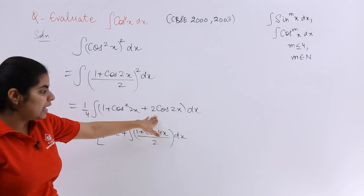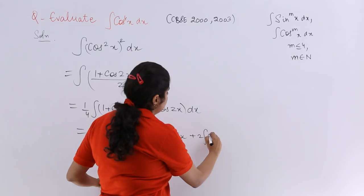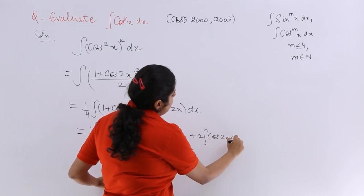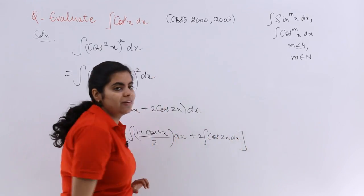Next is plus 2 which would come outside the integral. Integration cos 2x dx.